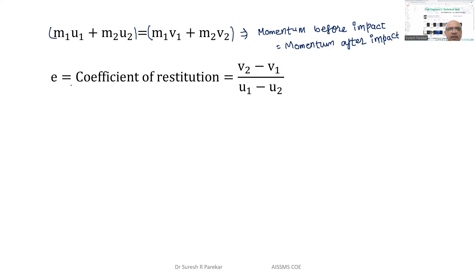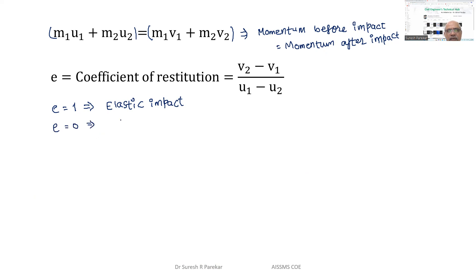The second equation is the coefficient of restitution: e = (v2 - v1) / (u1 - u2). For elastic impact, e equals 1. For plastic impact, e equals 0. For elastoplastic impact, e ranges between 0 and 1.